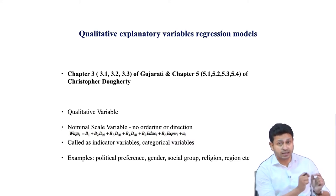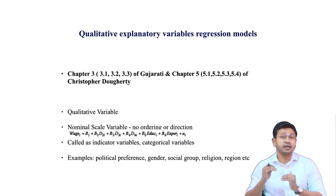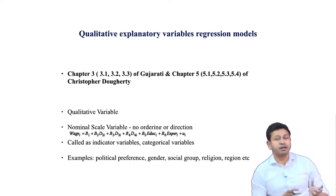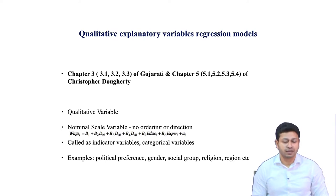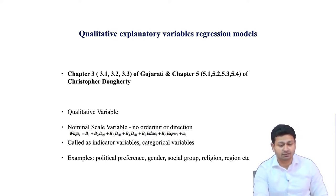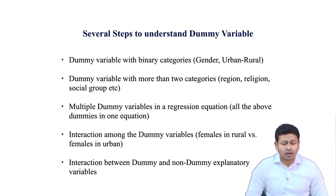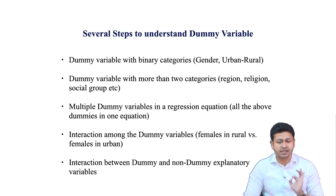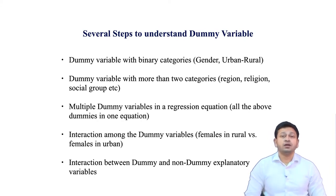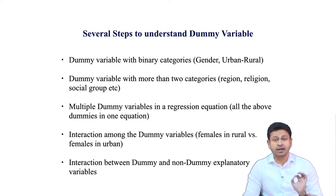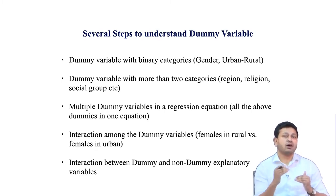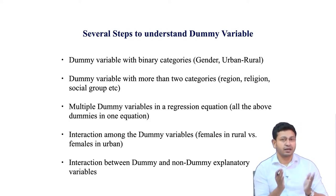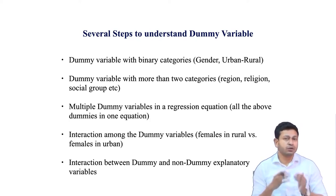For example, if I include a dummy variable called gender and my fixed category is male, then I try to see the impact of being female on the outcome variable. I will divide the lecture into parts. First, we will talk about the simplest type: the binary dummy variable, where there are only two categories — such as male/female, rural/urban, or white/non-white. You have one reference category and measure the impact of the other category relative to it.